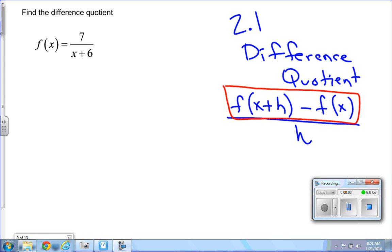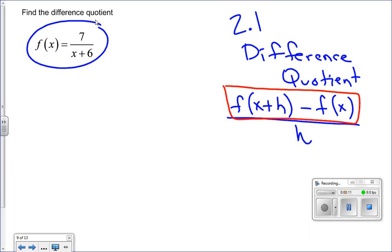Okay, so this is a continuation of section 2.1 on the difference quotient. If you remember, here's the formula. With rational functions, we're going to need to do the top part first.